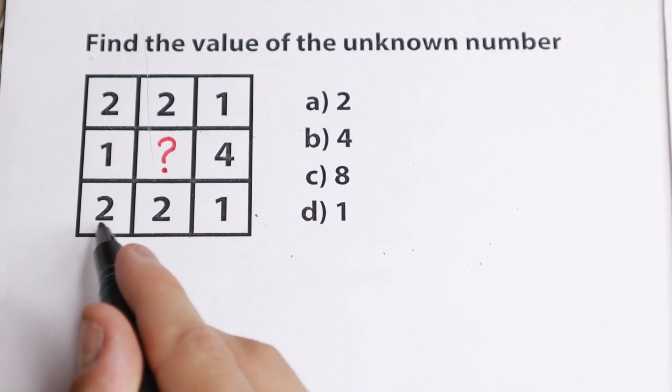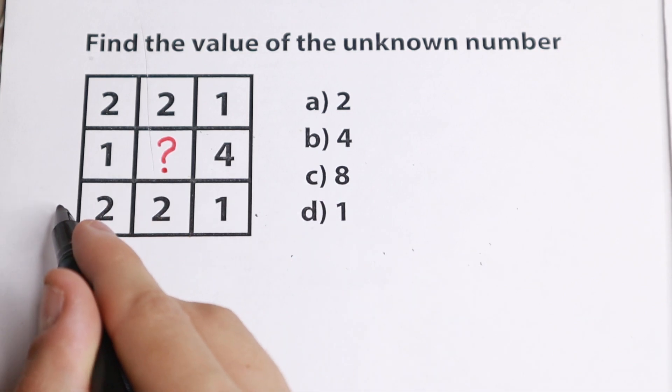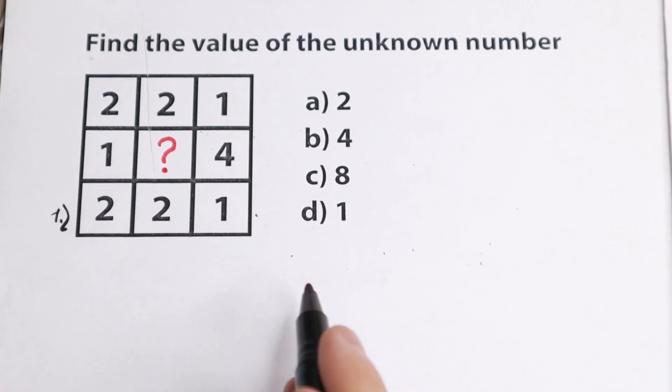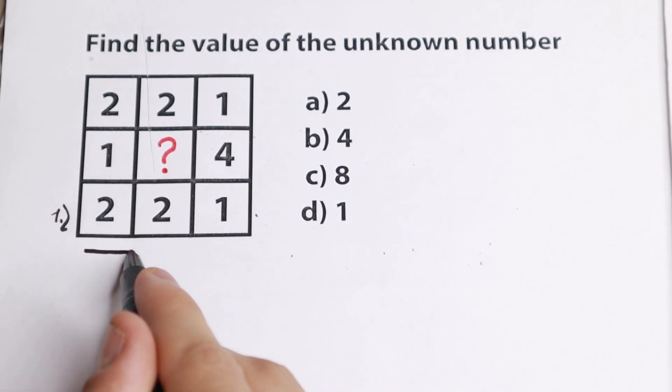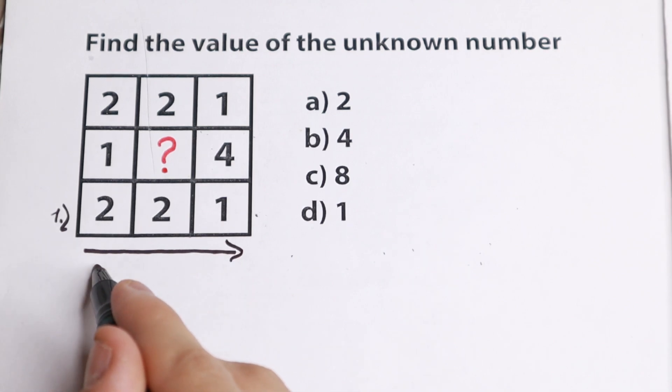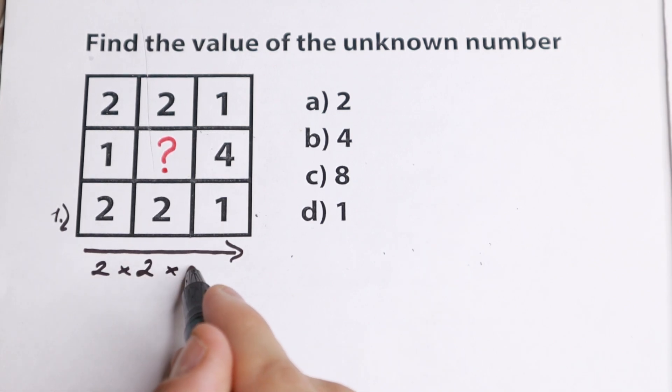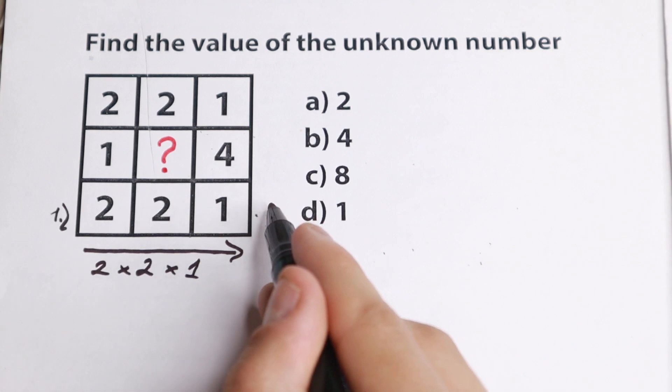Take a look closely. We have 2, 2, 1, this is our first line. I write it as a first line: 2, 2, 1. If we multiply this line, we have 2 times 2 times 1. If we multiply it, we will have 4. So as a result we will have 4.